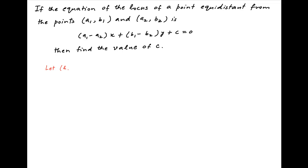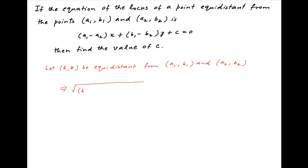Let (h, k) be the coordinates of the point that is equidistant from the given points (a1, b1) and (a2, b2). Therefore, the square root of (h minus a1) squared plus (k minus b1) squared is equal to the square root of (h minus a2) squared plus (k minus b2) squared.